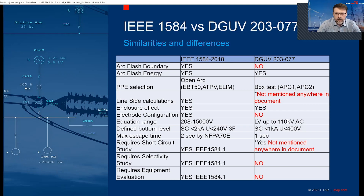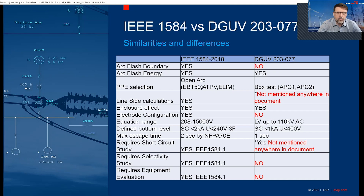Looking at the comparison: for IEEE 1584 we calculate arc flash boundary; for DGUV there is no arc flash boundary calculation — technically possible, but not really in the standard. Both calculate arc flash energy. PPE selection in IEEE uses open arc test — EBD 50, ATPV, or ELIM for Europe. For DGUV it's the box method test: APC1 and APC2.